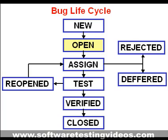After a tester has posted a bug, the lead of the tester approves that the bug is genuine and changes the state to open. Once the lead changes the state to open, he assigns the bug to the corresponding developer team. The state of the bug is now changed to assigned.